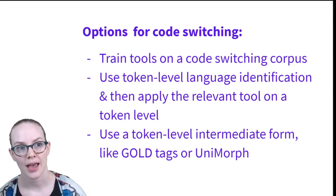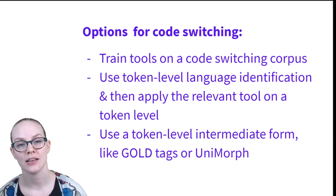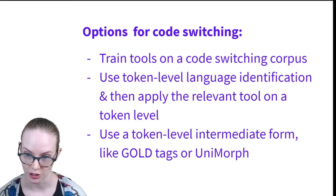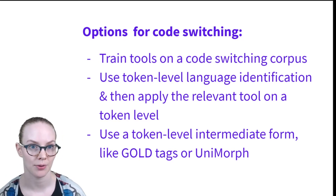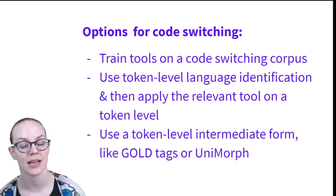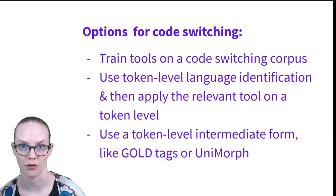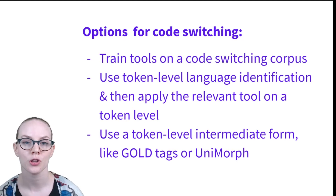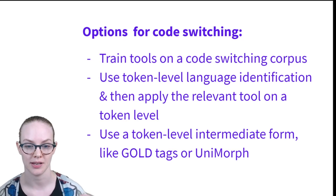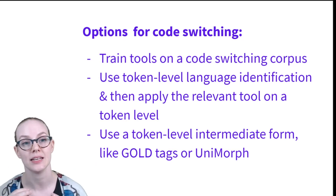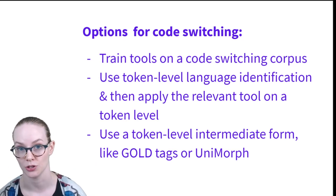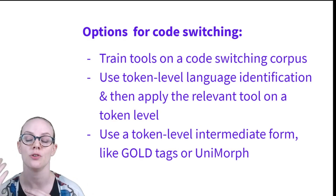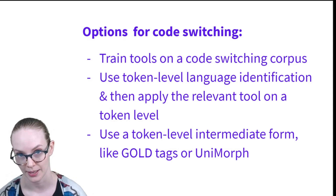In addition, you can annotate to an intermediate form that is shared between languages. Some examples of these annotation forms are gold tags, which are more focused on linguistic features, or unimorph tags, which are designed to be an intermediate system that you can map multiple languages onto. Then once you have that intermediate representation, you can continue with the rest of your NLP pipeline.